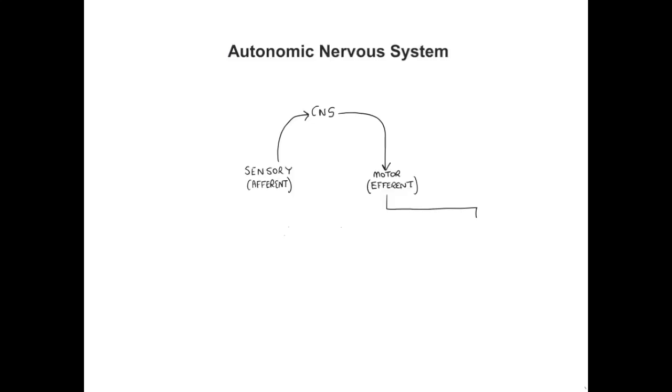The motor arm or efferent arm of the peripheral nervous system can be categorized further into two. The first is general somatic efferent. This essentially relates to motor nerves that are innervating our skeletal muscles and therefore convey voluntary control or are under our conscious control. So general somatic efferents are essentially the motor nerves to our skeletal muscle.